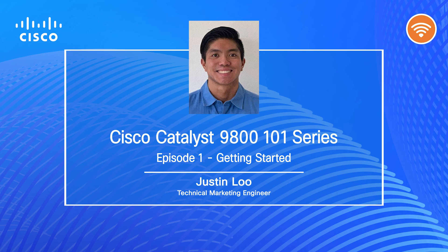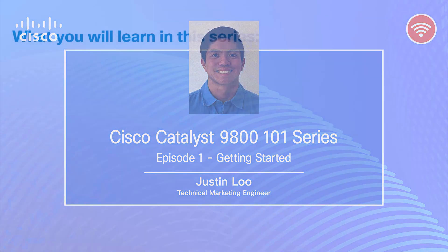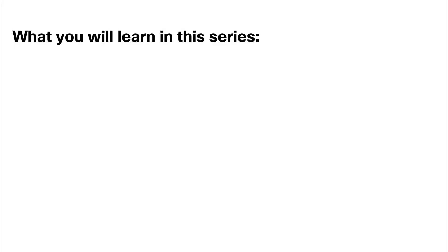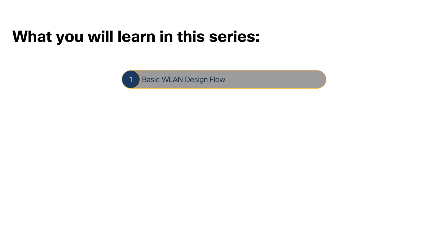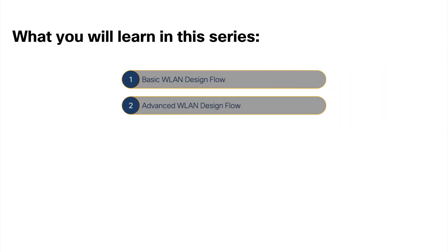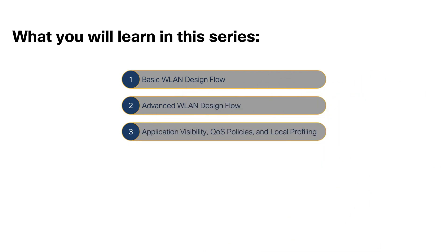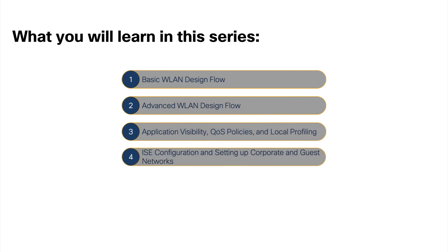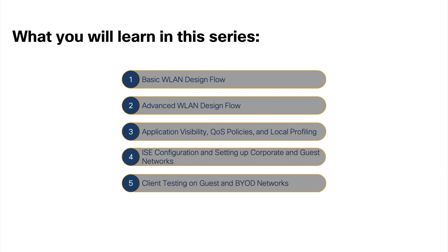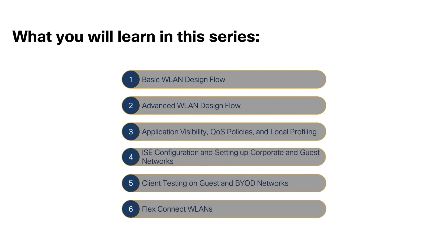In this series, we'll introduce you to the Cisco Catalyst 9800 Wireless Controller and show you how to configure it for your wireless deployments. Throughout this series, we'll cover the following day one configurations: how to create a WLAN using the basic design workflow, creating a WLAN using the advanced design workflow, configuring application visibility and QoS policies, as well as local profiling on the device, ICE configuration, how to set up a corporate and guest network, client testing for guest and bring your own device, and finally how to create a FlexConnect WLAN.